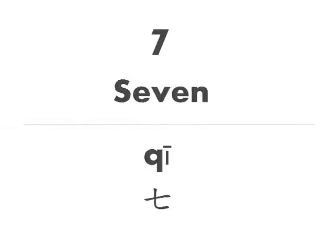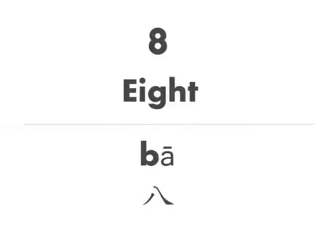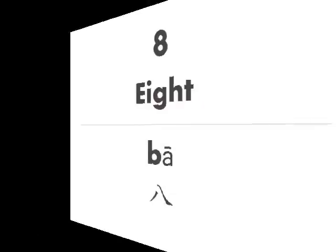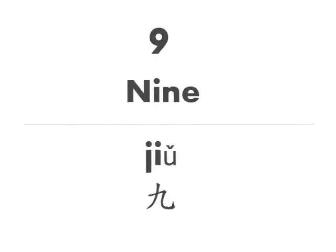The number 7 has the same high flat tone as number 1: qi. The number 8 also has the same tone as numbers 1 and 7. Now repeat after me: ba. Number 9, a falling rising tone: jiu. Again, jiu.